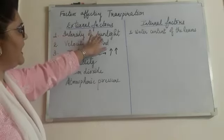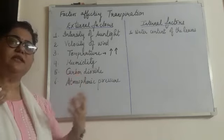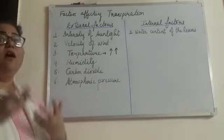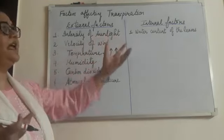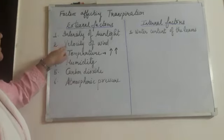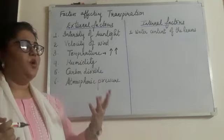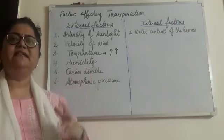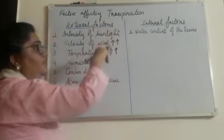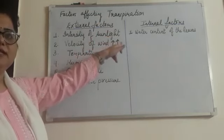In the same way, with the intensity of sunlight, whenever there is sunlight there is photosynthesis, and because the guard cells absorb water and become turgid, transpiration occurs. But if there is intense sunlight and the temperature is too much, it will also stop transpiration. Now let's come to velocity of wind — that means speed of wind. If the speed of wind is more, it can easily take away more water vapors along with it, causing an increase in transpiration. So more is the velocity of the wind, more is the process of transpiration.